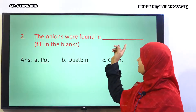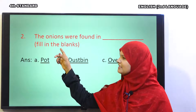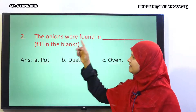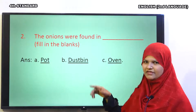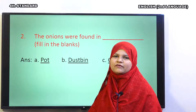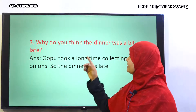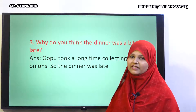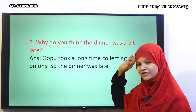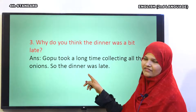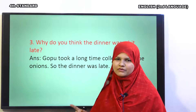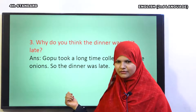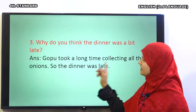So, the onions were found in dash, dash. Kahaan kahaan par phaili hui thi onions? Very good — pot, dustbin and oven. So, the onions were found in a pot, dustbin and oven, though they were found everywhere in the kitchen. Very good. Next question: why do you think the dinner was a bit late? Yes, you are right. That day the dinner was too late because Gopu took a long time collecting all the onions. So, the dinner was late. Gopu ko tamaam jagahon se piyaaz dhundhne ke liye bahut saara waqt dharkar ho gaya, isi liye us din khana banane ke liye kaafi dair ho gayi.